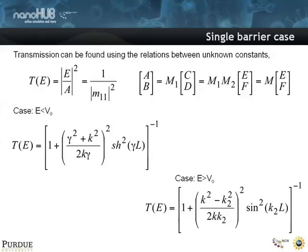What's k2L? k2 is the propagation constant above the barrier, and L is the length of that barrier. So the length of the barrier suddenly matters for the transmission over the barrier. Let me say that again. The transmission over the barrier depends on the length of that barrier, even though the wave has enough energy to go over the barrier. And it's in the form of a sine squared.